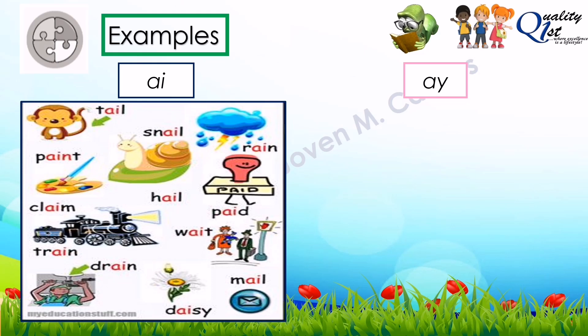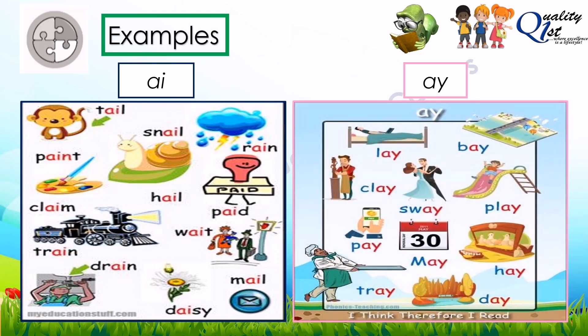Now kids, beware of the long A sound. For the AY digraph, we have: lay, bay, clay, sway, play, pay, may, hay, tray, and day.